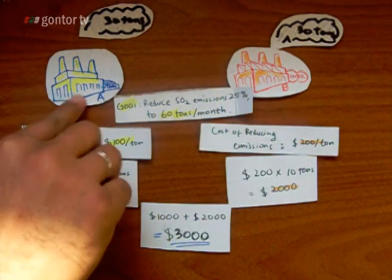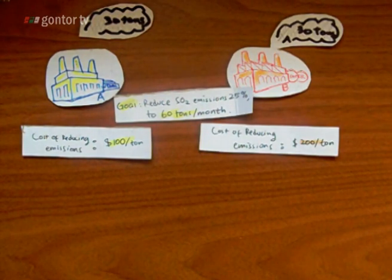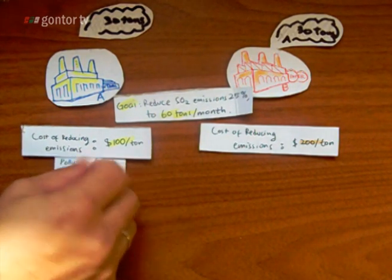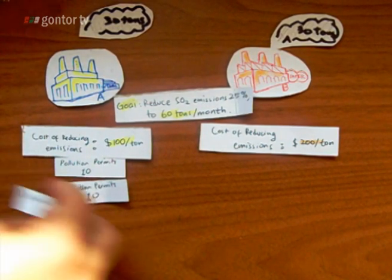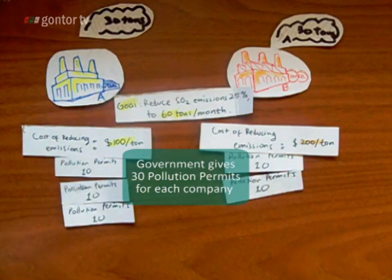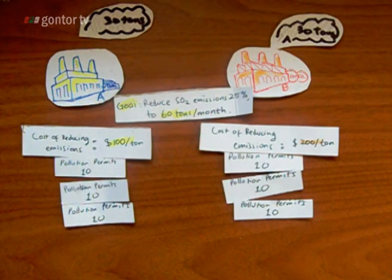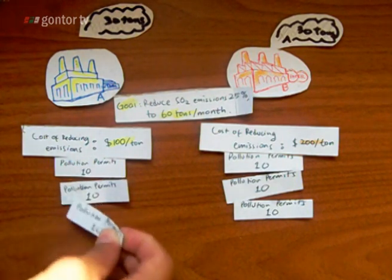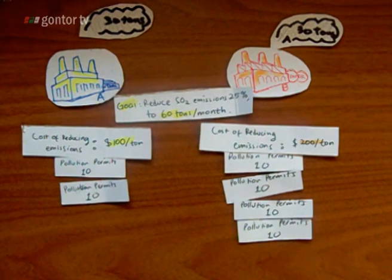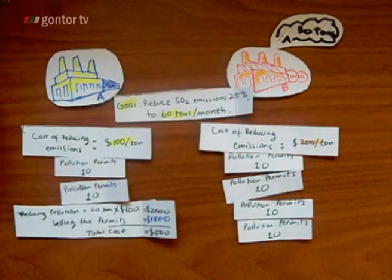Now let's see what will happen when pollution permits are issued. The government issues 60 pollution permits, so every company can use 30 pollution permits each. Now company A decides to use only 20 pollution permits and sell the other permits to firm B.